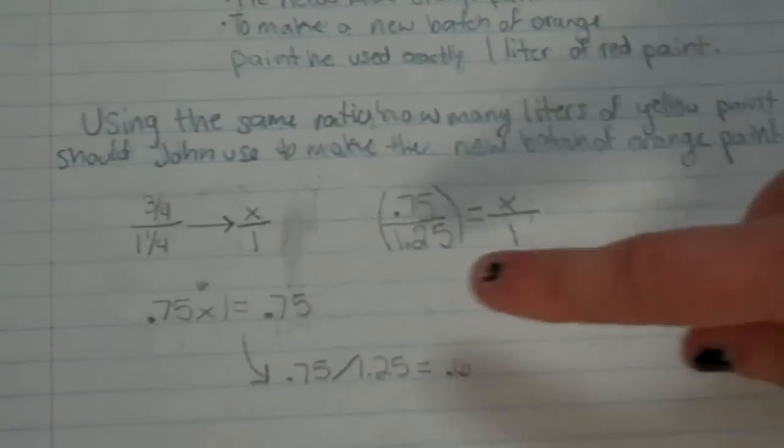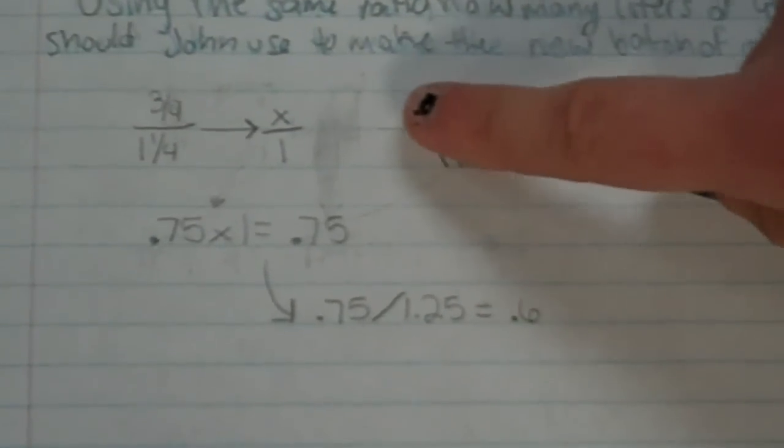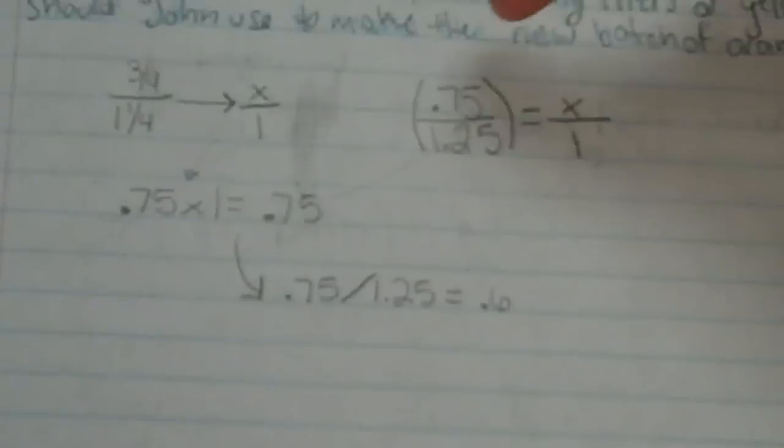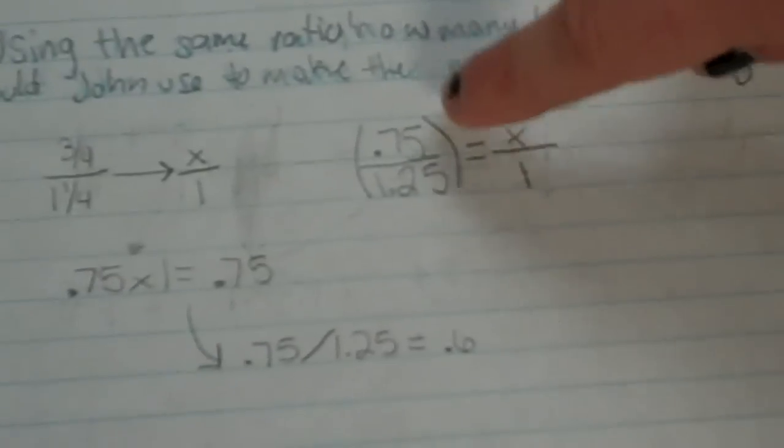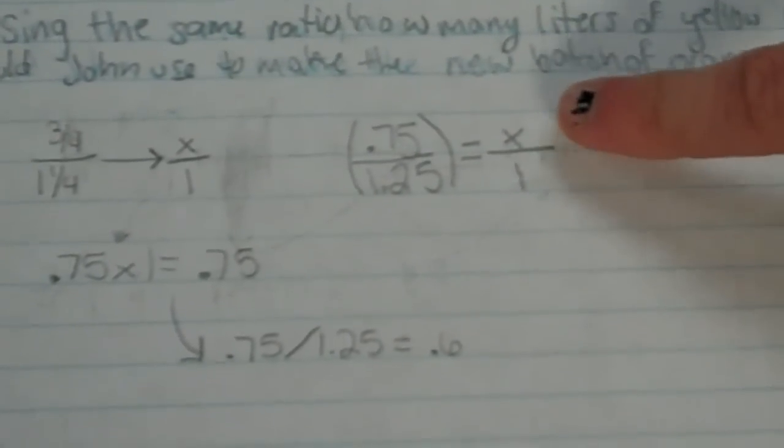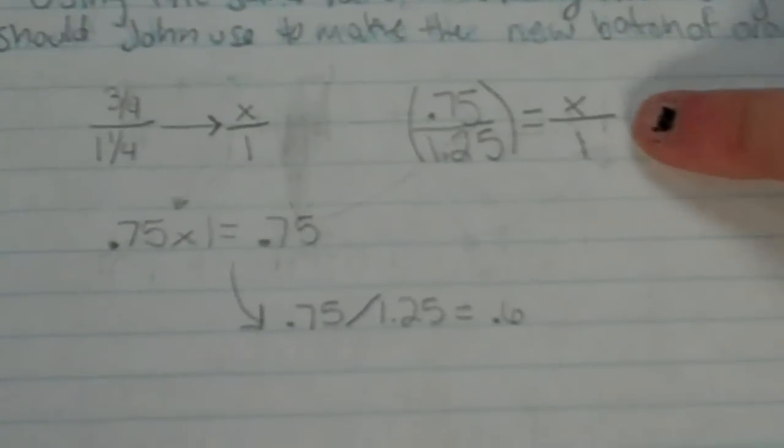So what I did was I set up 3/4 over 1 1/4, which equals x over 1. And then I changed both of them to a decimal. So now it's 0.75 over 1.25, which equals x over 1. X is the yellow paint that would be used, and 1 for the liter of red paint.